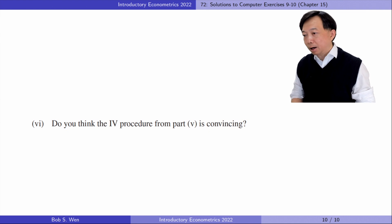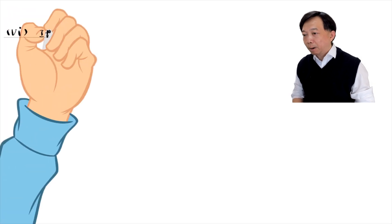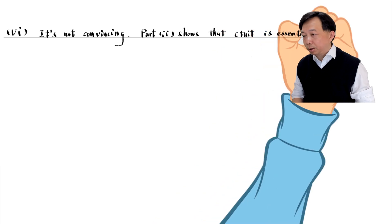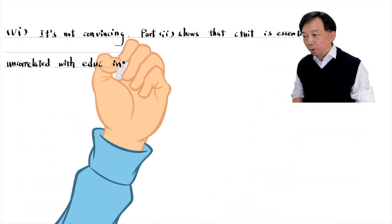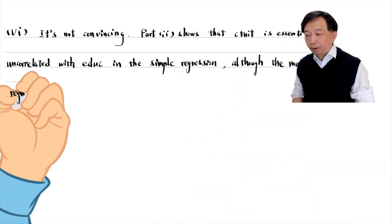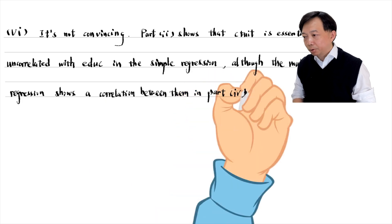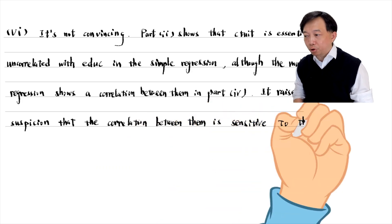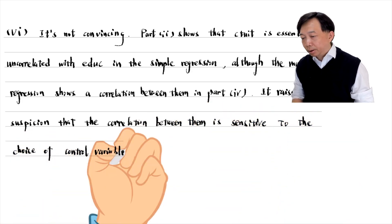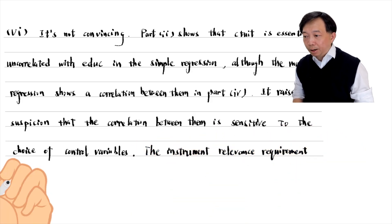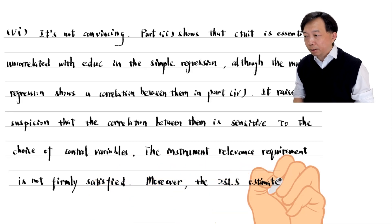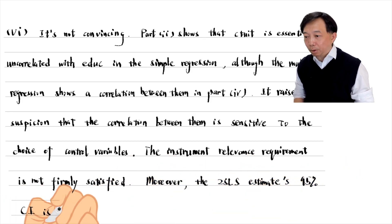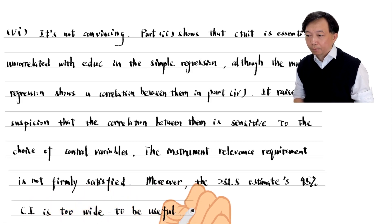In part 6, the IV procedure from part 5 is not convincing. Part 2 shows that the change in tuition is essentially uncorrelated with education in a simple regression, and although the multiple regression shows a correlation, this raises suspicion that the correlation is sensitive to the choice of control variables — the instrument relevance requirement is not firmly satisfied. Moreover, the two-stage least squares 95% confidence interval is too wide to be useful.